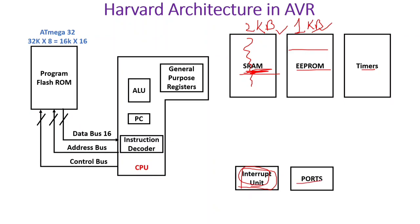ATmega32 has 4 I/O ports: Port A, Port B, Port C, and Port D. Input and output peripherals are connected through these ports. There are also other on-chip peripherals including ADC interfacing, UART interfacing, SPI interfacing, and I2C interfacing. These are collectively referred to as other peripherals.